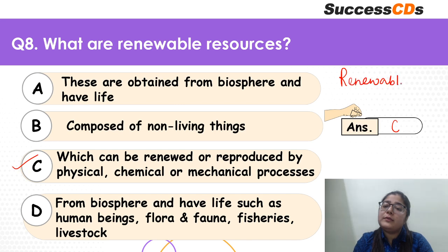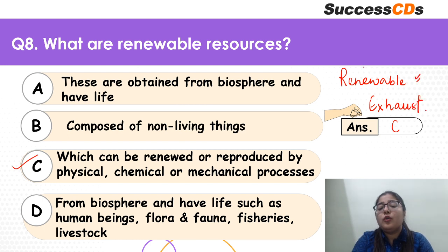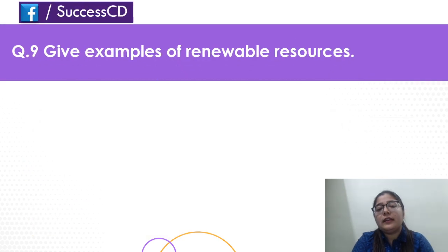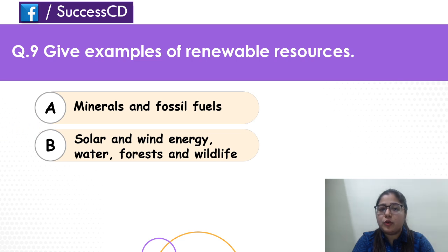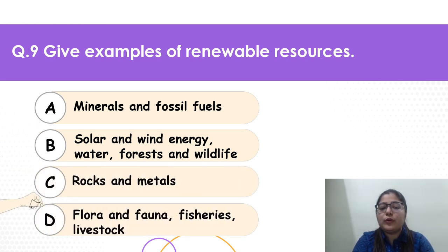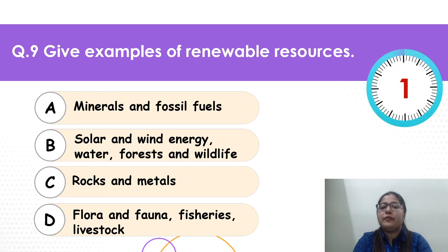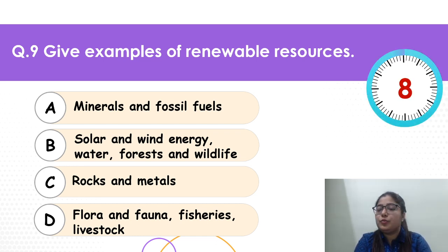As the name suggests, renewable resources do not get exhausted quickly because they can be renewed — they come back to us. What are examples of this? Coming to that: give examples of renewable resources. Mineral and fossil fuels? Solar and wind energy, water, forests and wildlife? Rocks and metals? Or flora and fauna, fisheries and livestock? Time begins now.